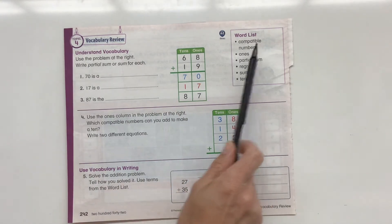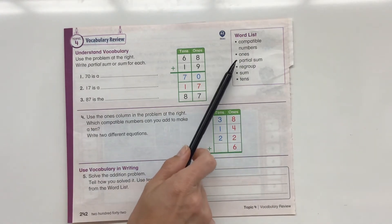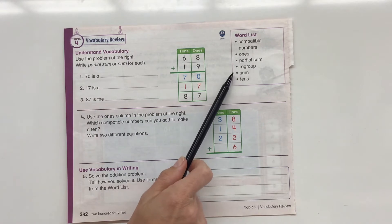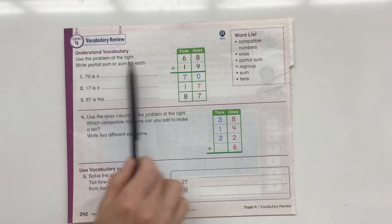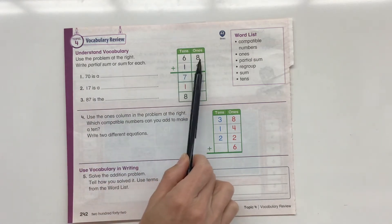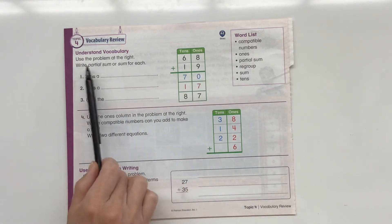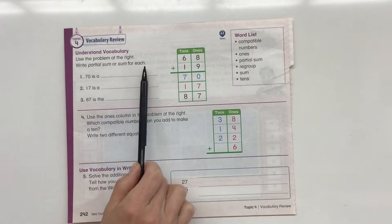This is our word list: compatible numbers, ones, partial sum, regroup, sum, and tens. So we're going to take a look at understanding our vocabulary. Use the problem at the right. So we're going to use 68 plus 19. Write partial sum or sum for each.